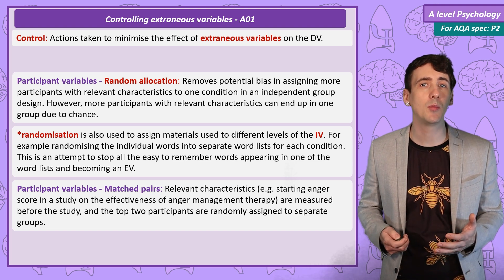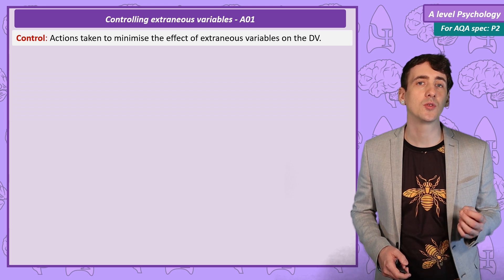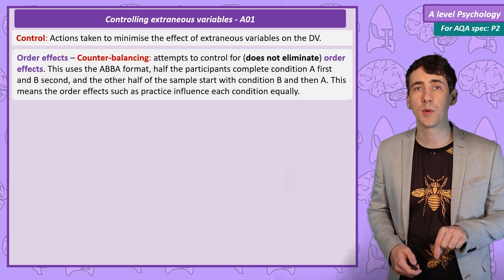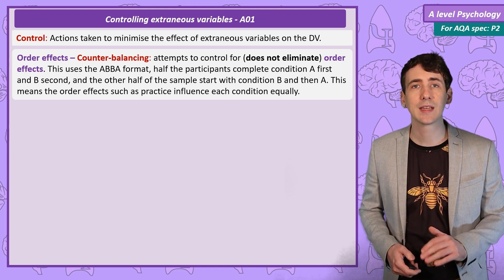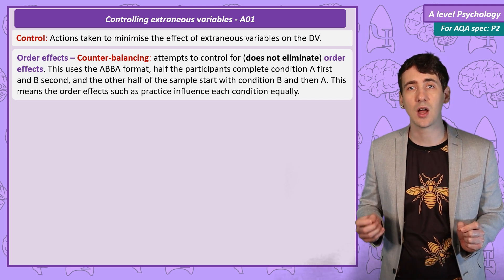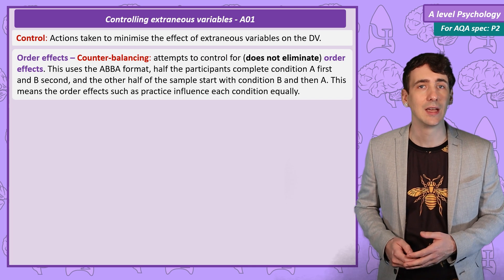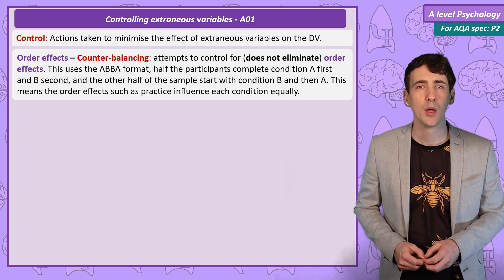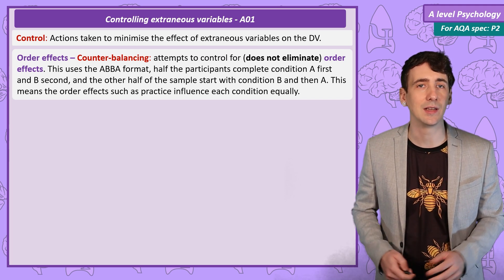To control for order effects, we would use counterbalancing. Completing one condition first can change participants' performance in the second condition by giving them practice or making them tired. Counterbalancing — splitting the sample of participants in half and getting each half to do one of the conditions first — means any effect due to practice or fatigue is cancelled out, because it's the same in both conditions. But importantly, while we can say we have controlled for order effects, we can't say they have been eliminated.